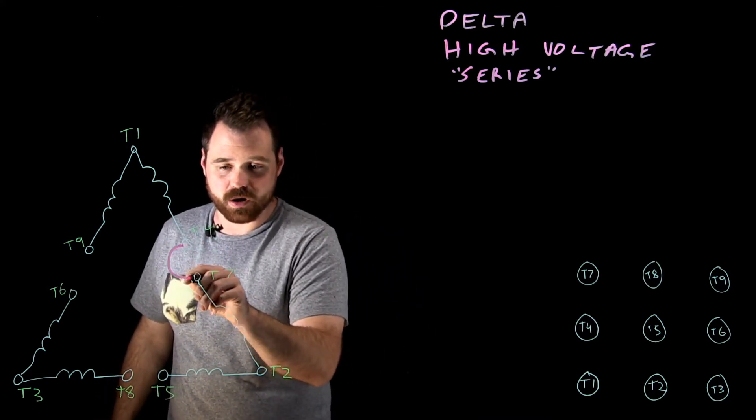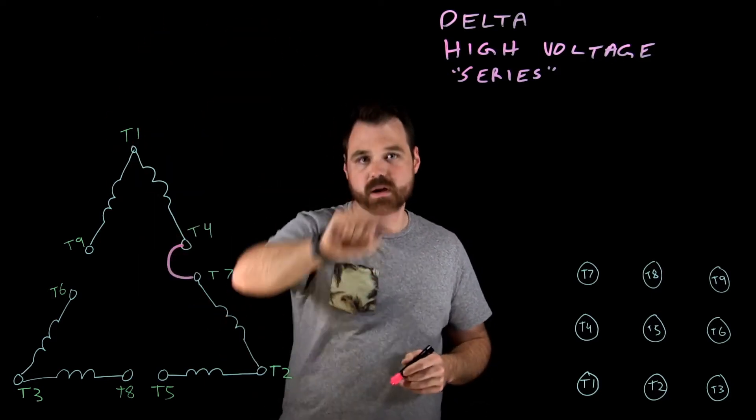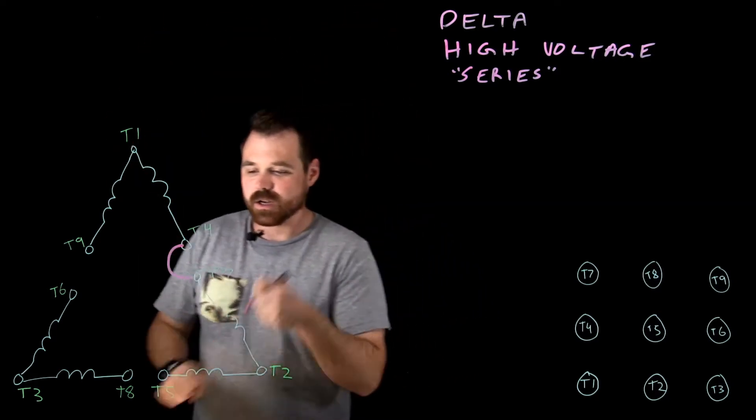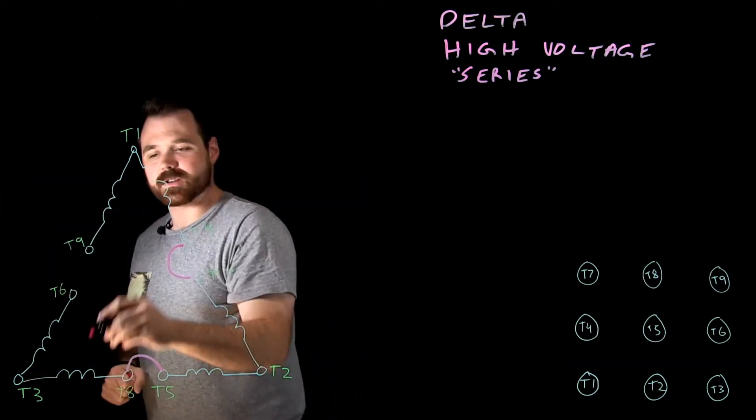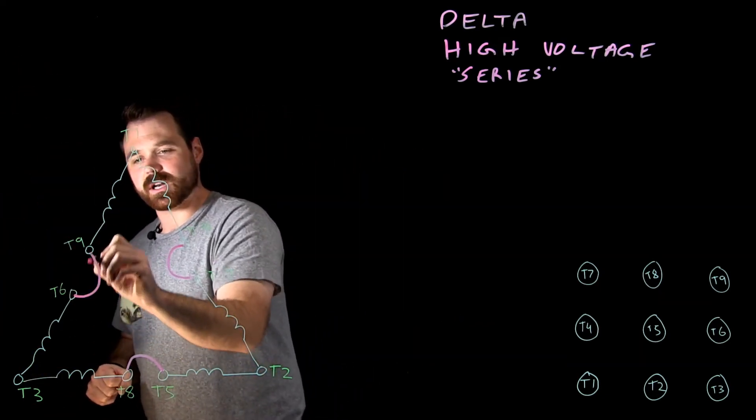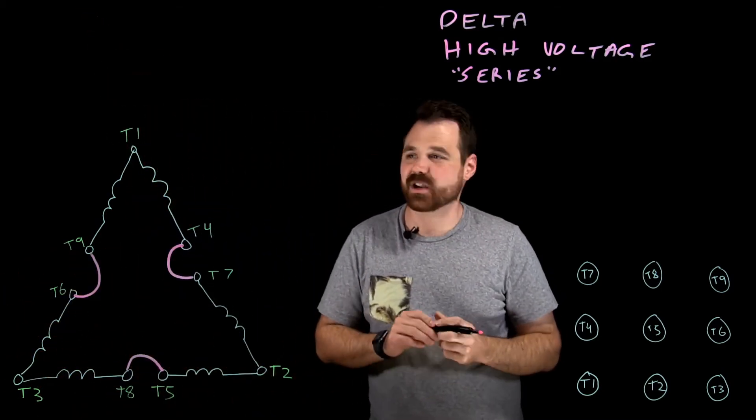We're going to put T4 in series with T7. Current flows through and out back to my source. Perfect. T5 in series with T8. Current flows in and then out. Perfect. And then T6, we're going to connect to T9. And it's as straightforward as that for that series connection.